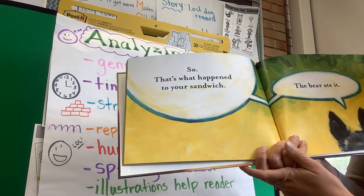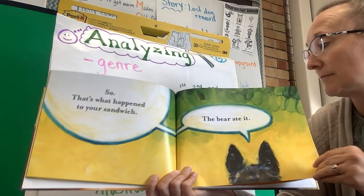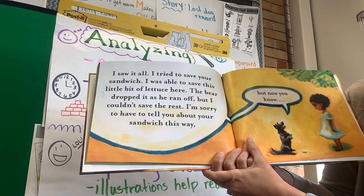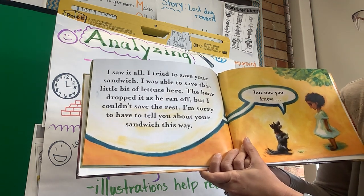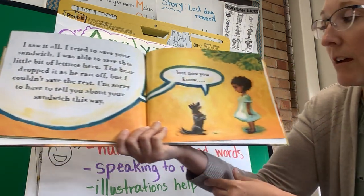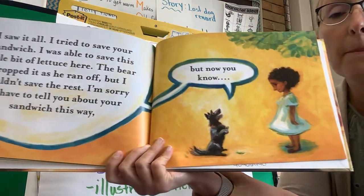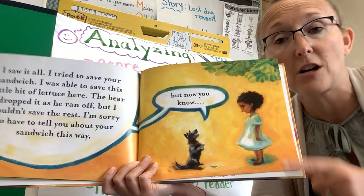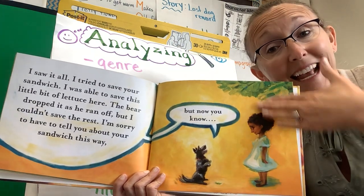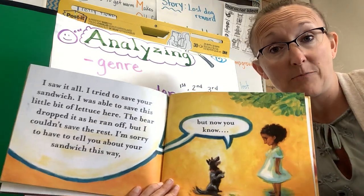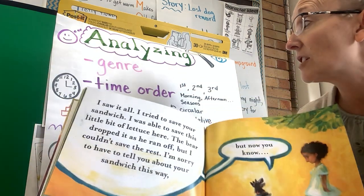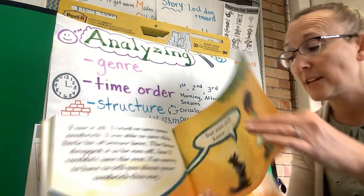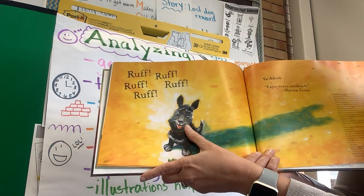'That's what happened to your sandwich — the bear ate it. I saw it all. I tried to save your sandwich. I was able to save this little bit of lettuce here — the bear dropped it as he ran off — but I couldn't save the rest. I'm sorry to have to tell you about your sandwich this way, but now you know.' Now I know something different — the dog has been telling the story the whole time. They weren't talking to me; they were talking to this little girl. It's almost like I am the little girl. We can notice who is telling the story and change our mind because we learned new information.